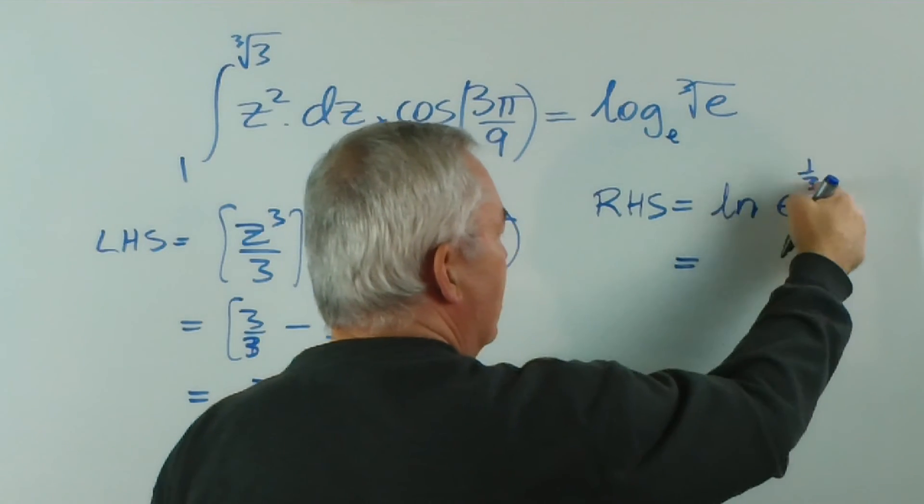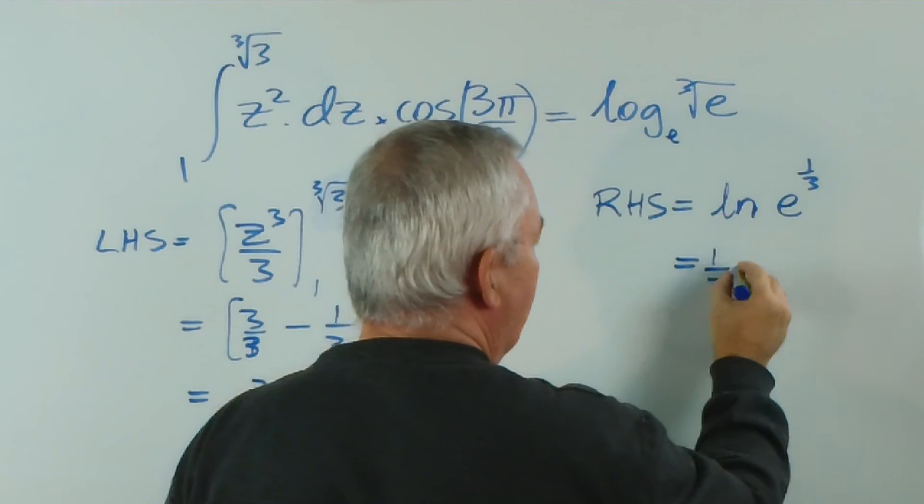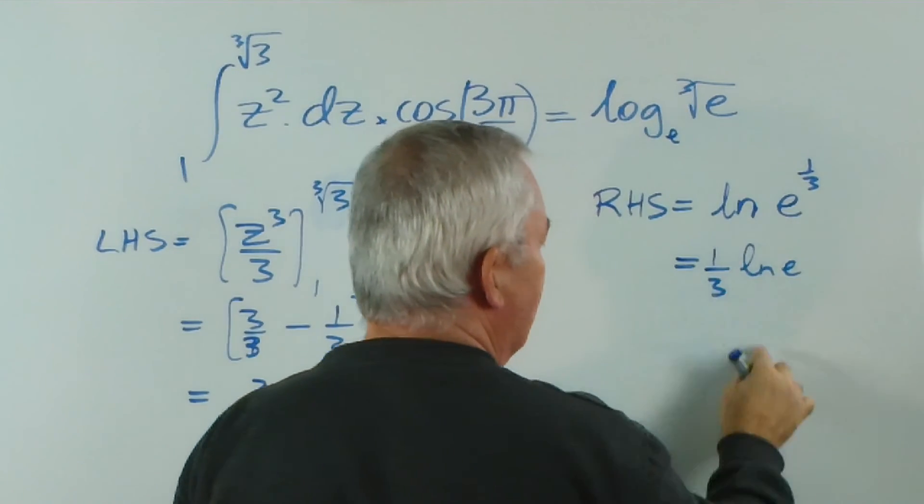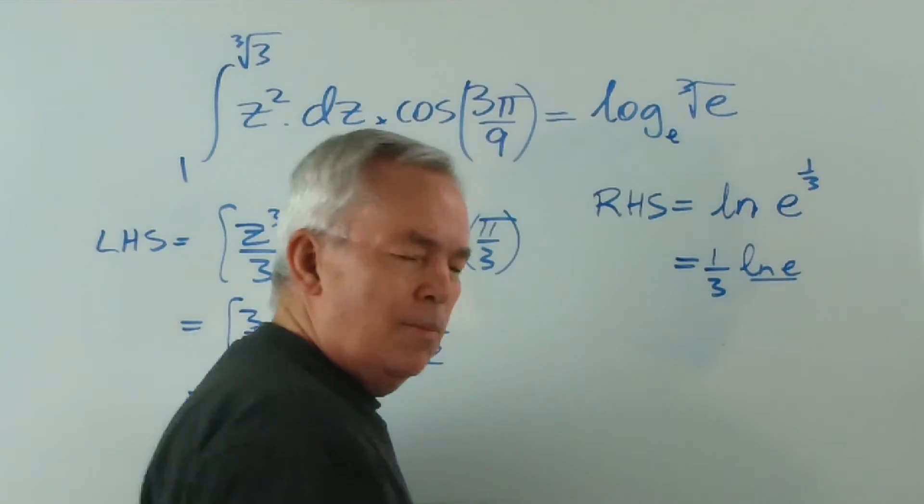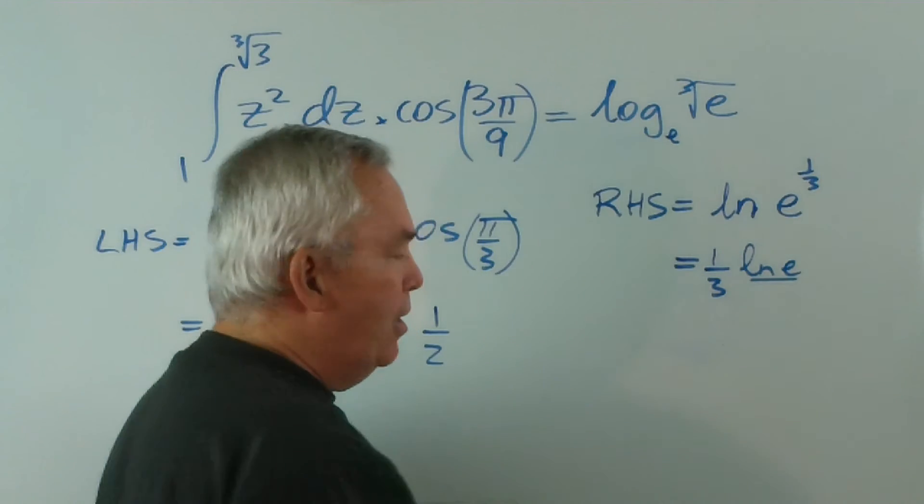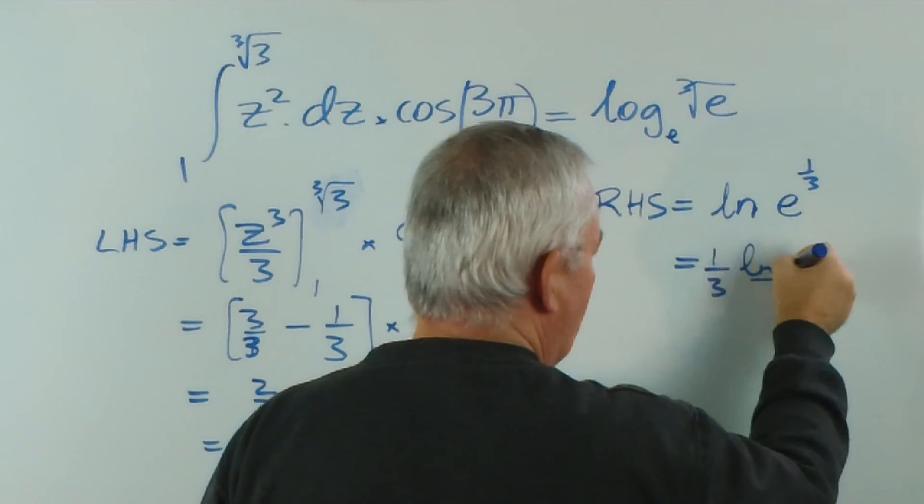There's a logarithmic rule that says this pops out the front... there's another logarithmic rule that says the logarithm of e base e is equal to 1... so that equals 1...